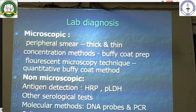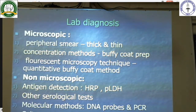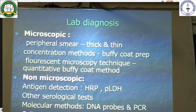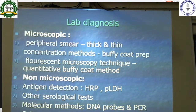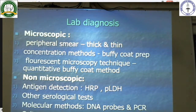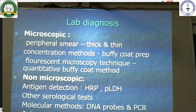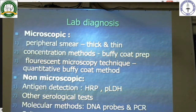Lab diagnosis is divided into microscopic and non-microscopic methods. On microscopy, a thick and thin peripheral smear or buffy coat preparation is done, and RBCs are observed for malarial parasites — either the ring forms or the gametocyte form. Fluorescent microscopy can also be done on the quantitative buffy coat. Non-microscopic methods include antigen detection — the HRP protein or pLDH protein present on the malarial parasite — as well as molecular methods like DNA probes, PCR, and culture.